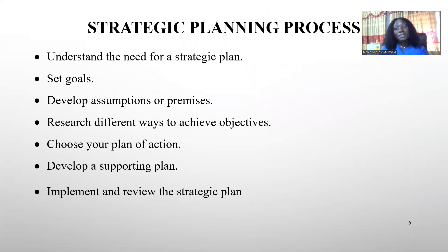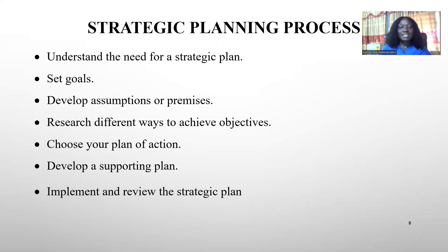We want to look at the strategic planning process. In every planning activity, there needs to be an alignment of plans with strategy — the roadmap of the organization. In trying to plan, you first need to understand the need for a strategic plan: what you intend to achieve and where you intend to go. Then you set goals, develop assumptions or premises, research different ways to achieve objectives, choose your plan of action, develop a supporting plan, and finally implement and review the strategic plan.